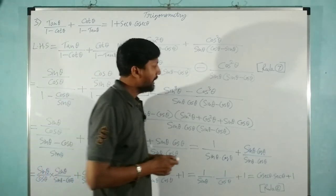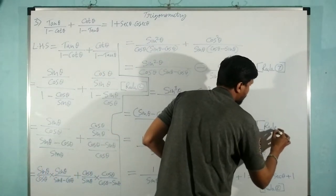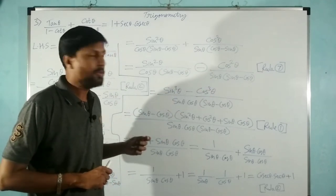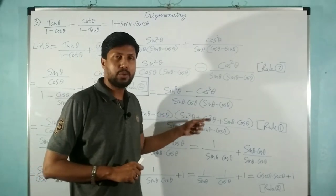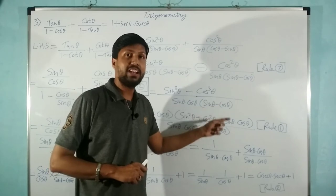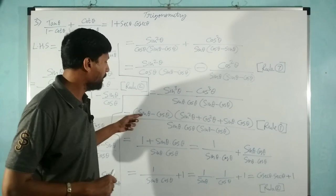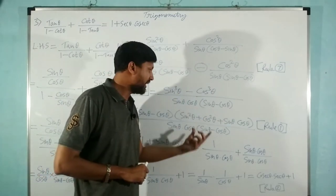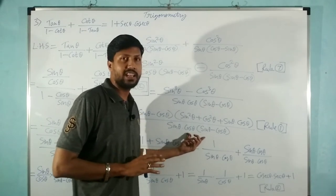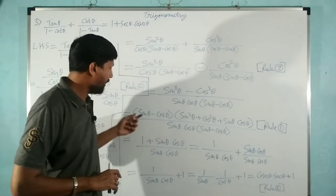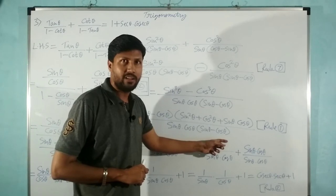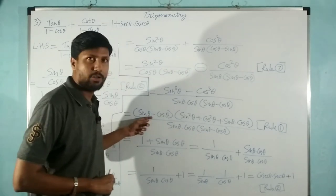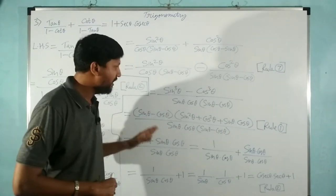Now we apply rule number 1 — algebraic identities. We use the identity a³ - b³ = (a - b)(a² + ab + b²). So sin³ θ - cos³ θ = (sin θ - cos θ)(sin² θ + cos² θ + sin θ · cos θ). The denominator remains as it is. We then cancel (sin θ - cos θ) from both numerator and denominator.